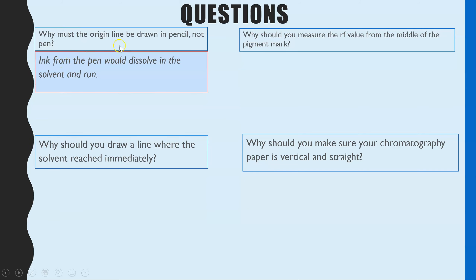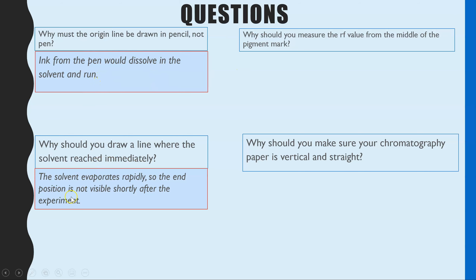The answers: number one — it has to be pencil marks on your chromatography or TLC paper because pens contain ink, and ink is a pigment. That ink would dissolve in the solvent, run up your chromatography paper, and interfere with your chromatogram. Number two — you draw a line where the solvent reached immediately after taking it out because the solvent evaporates very quickly, so the solvent front is not visible shortly after the experiment, and without that pencil line you won't be able to calculate your Rf values.